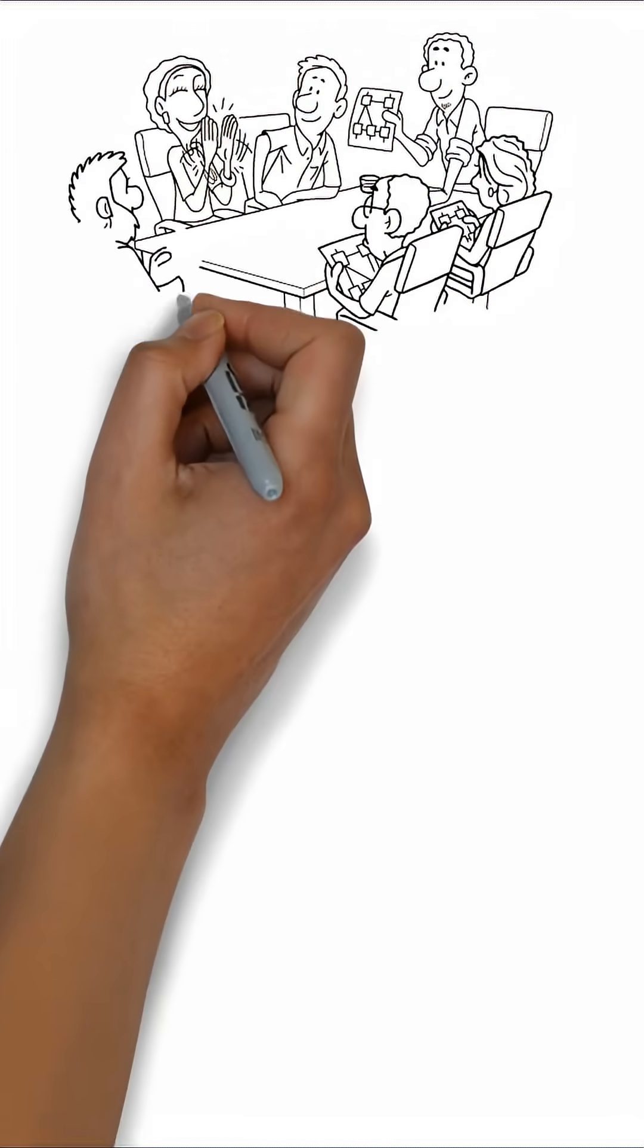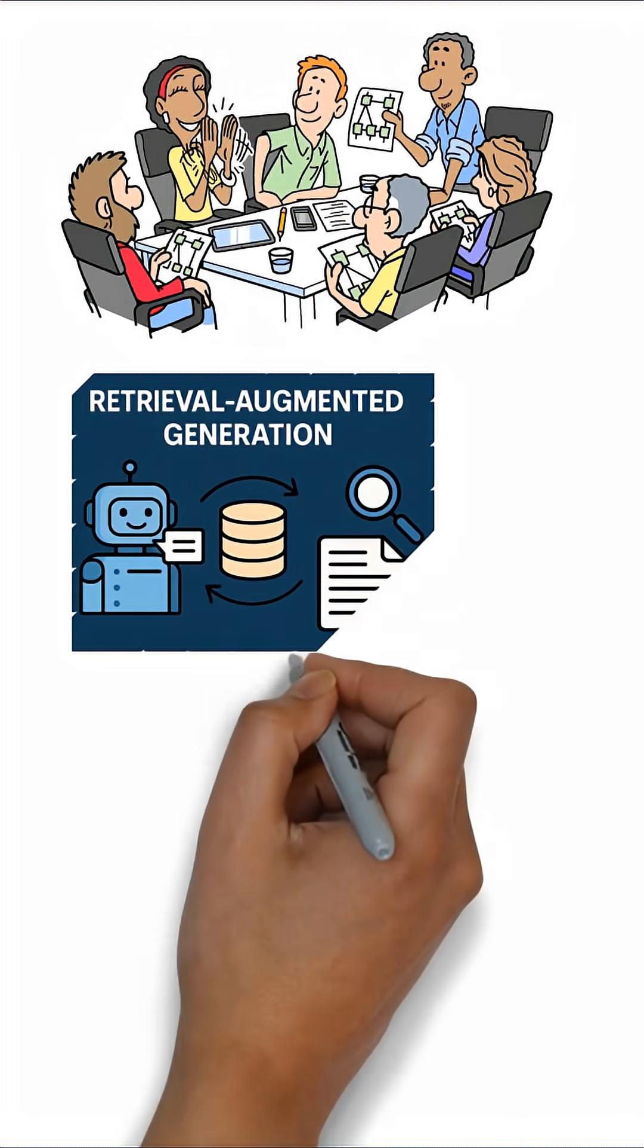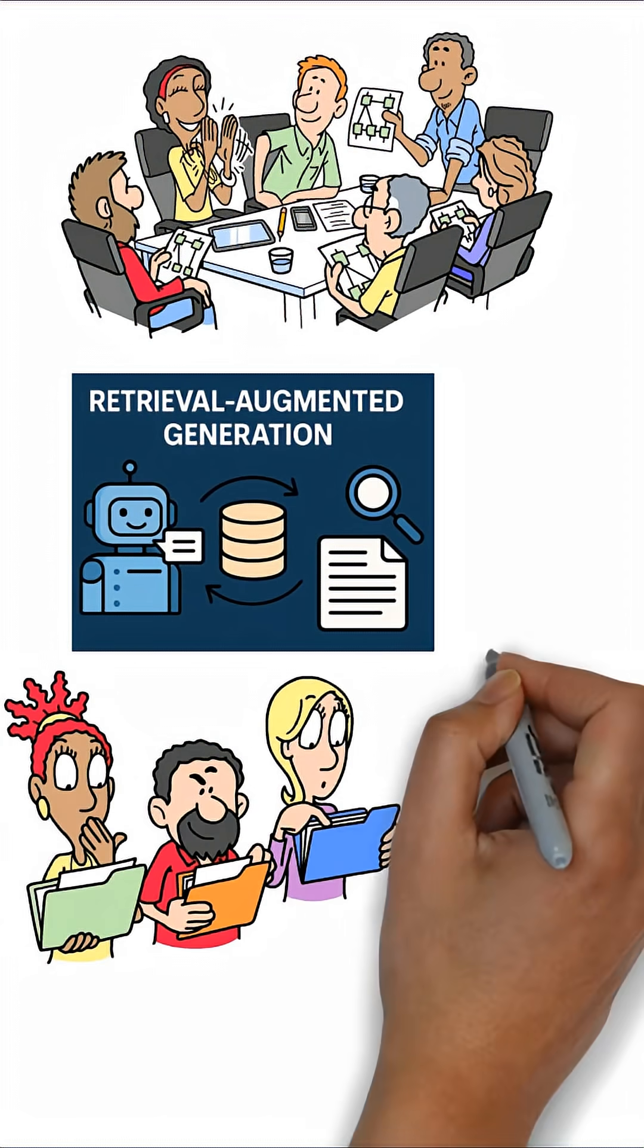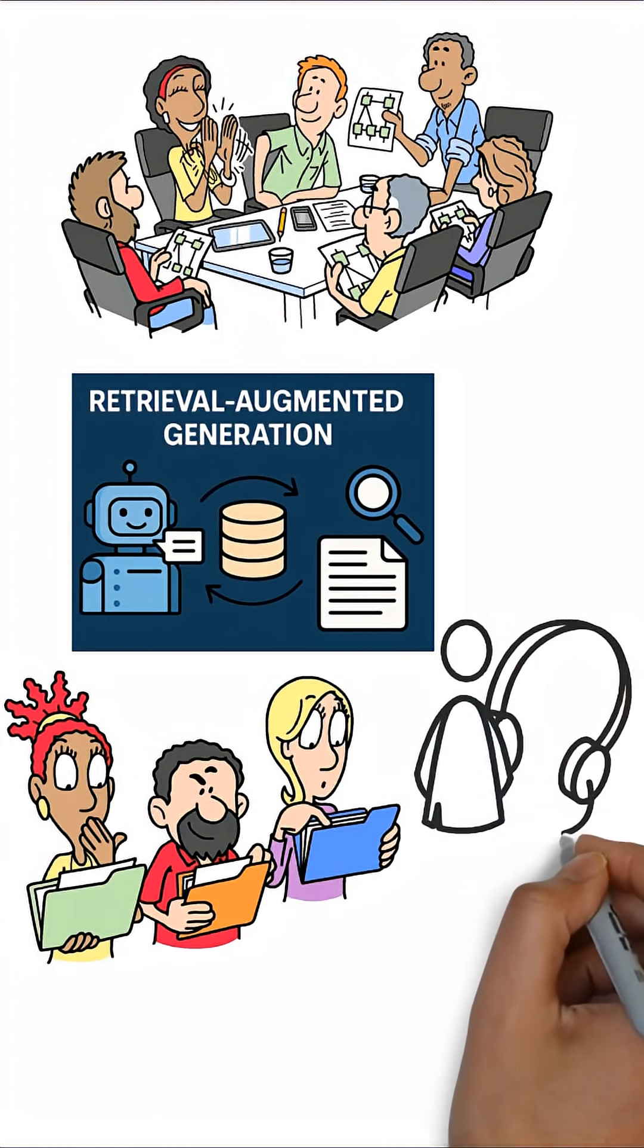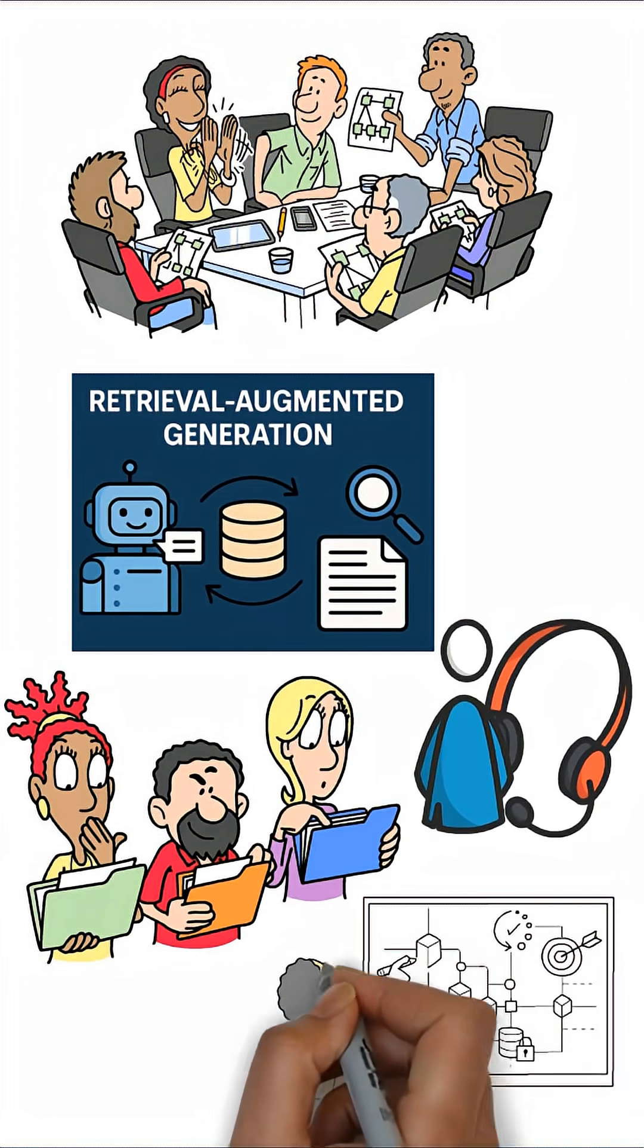For corporate businesses or startups, RAG turns AI from a generic assistant into a specialized expert on your business. It means accurate reports based on real data, customer service that knows your actual policies, and strategic advice grounded in your company's reality.